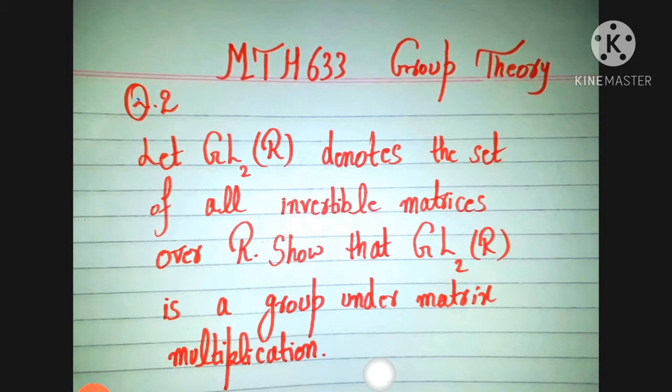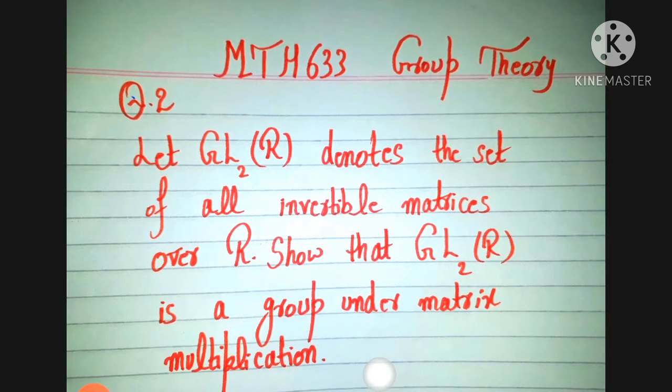General linear group of degree 2 ko group prove karne ke liye, closure property, associative property, identity aur inverse property prove karni hogi. Ye sab the field GL₂(ℝ) over ℝ ke liye group sabit karne ke liye zaroori hain.